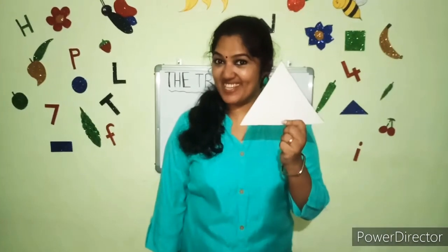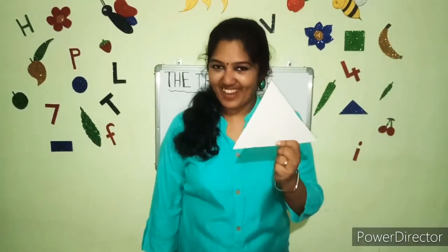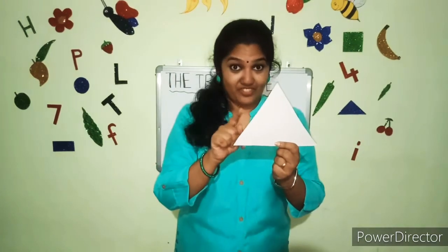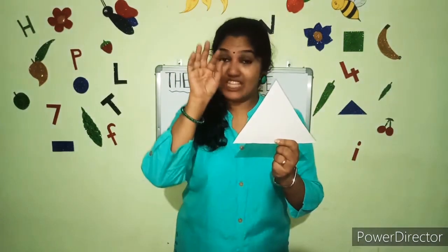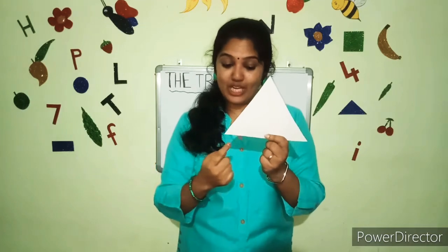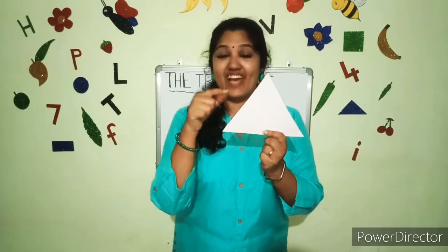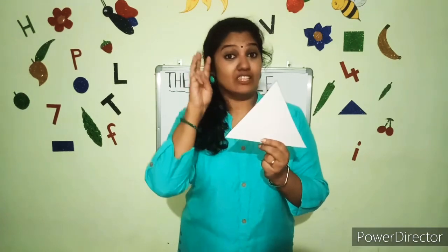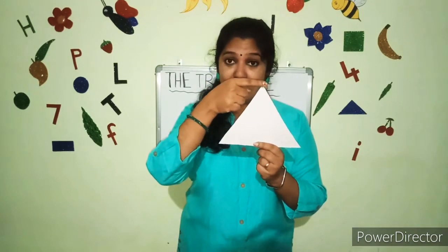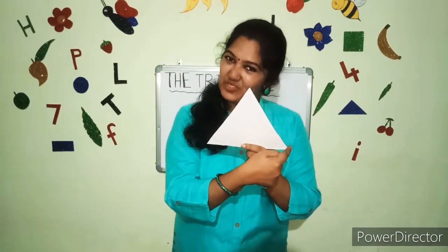What shape is this? Triangle. Very good. The triangle has three sides: one, two, three. And it has three corners: one, two, and three.